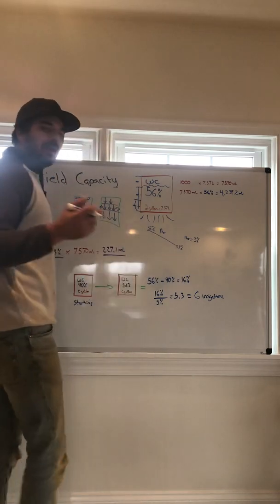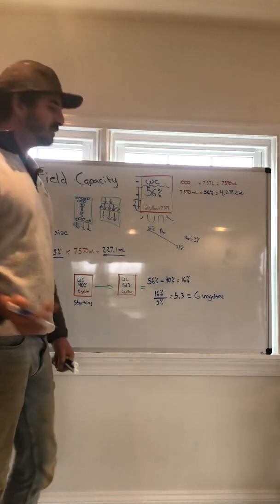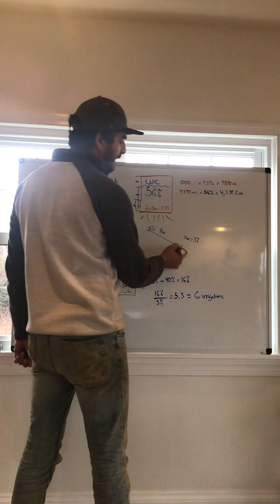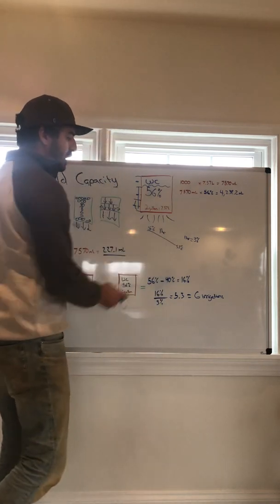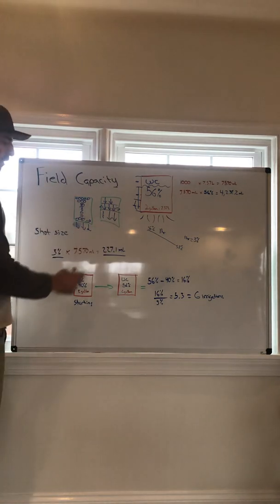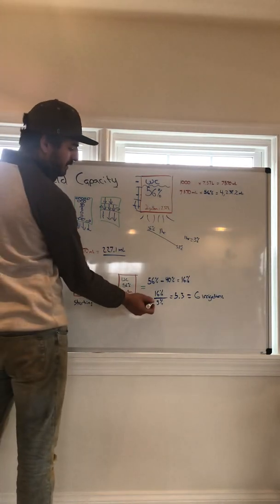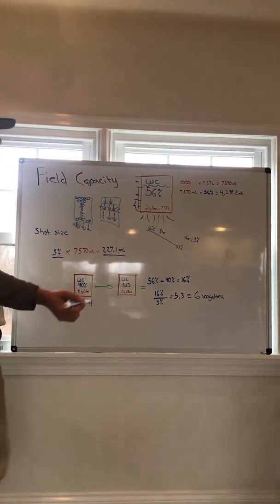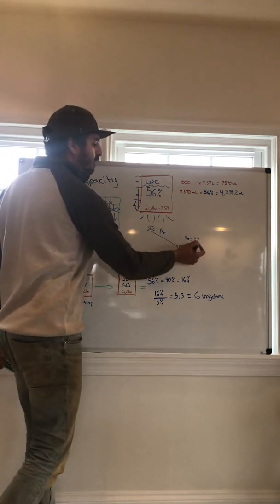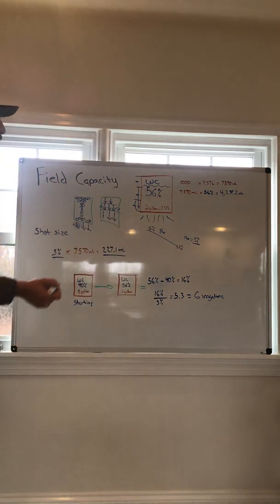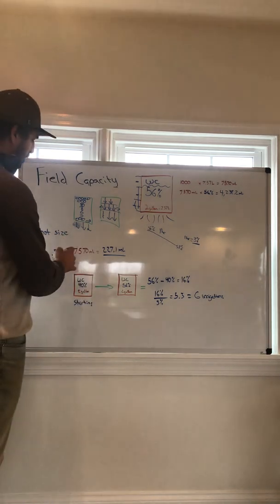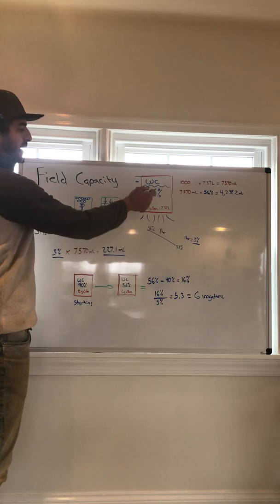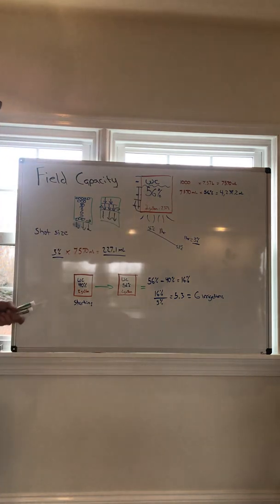Because remember in that one hour time, you dry back 3%. So in this scenario, if you're trying to resaturate this medium in a one hour period of time, and you're drying back 3% per hour, then we already know that you're going to need to apply a larger irrigation event if you want to resaturate up to that 56% in a one hour period of time.